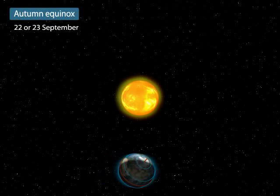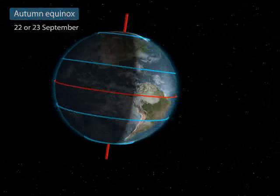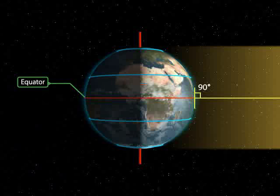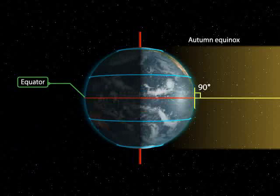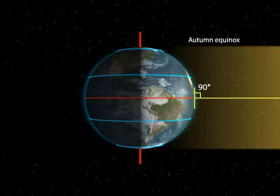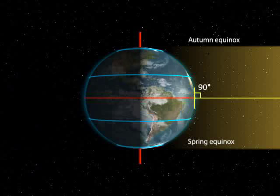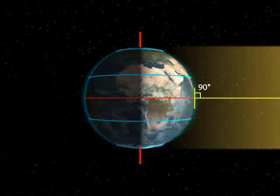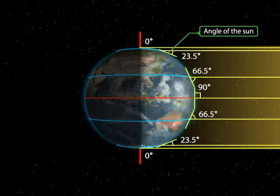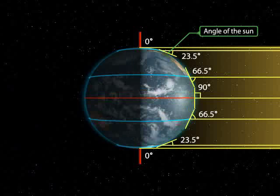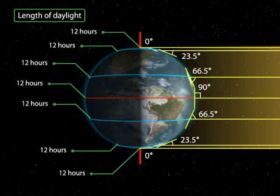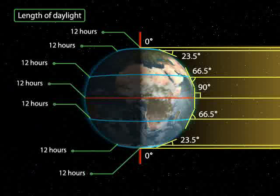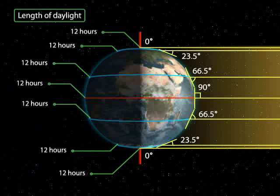Autumn equinox: On the 22nd or 23rd of September, the overhead Sun is over the equator again. The equator receives the largest amount of solar radiation. On this day, the northern hemisphere is in the autumn equinox, while the southern hemisphere is in the spring equinox. The angle of the Sun decreases towards the poles. The two hemispheres receive a similar amount of solar radiation, and the length of day and night is the same at all places on the Earth.